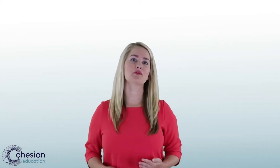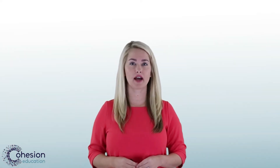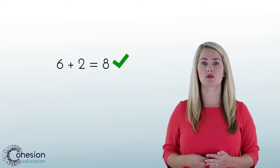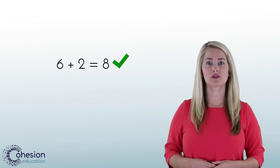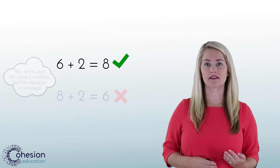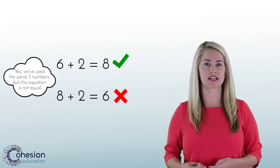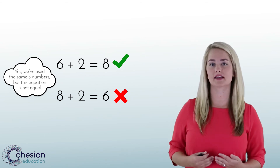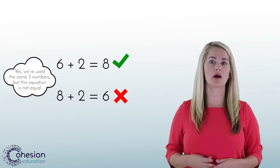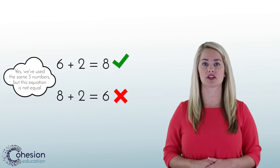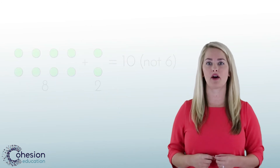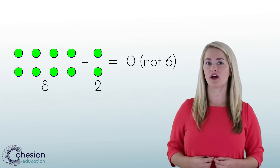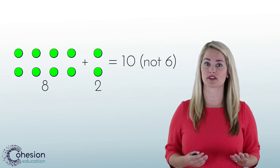A possible mistake may be that students still use the three numbers in the addition fact, but in the wrong place. For example, six plus two equals eight, but students would write eight plus two equals six. In order to address this, you may draw a picture or model of the addition equation, or use objects to count and show that eight plus two can't equal six.